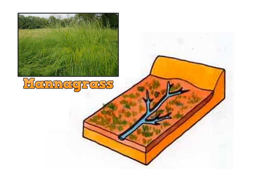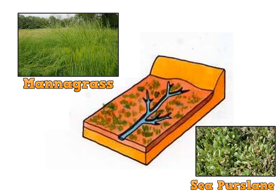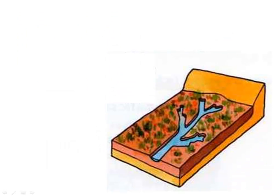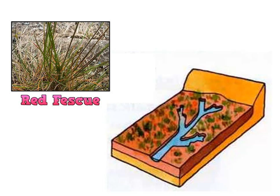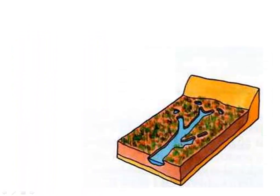You might get species such as marram grass and sea purslane, and later on perhaps red fescue and sea rush. As the mud deepens further, the marsh slowly grows with more and more plants colonising until it's largely covered with vegetation, and it's only the highest tides that will now cover the whole marsh.